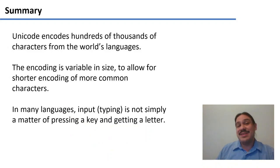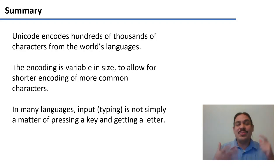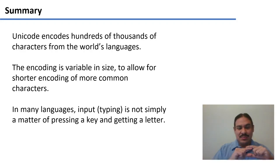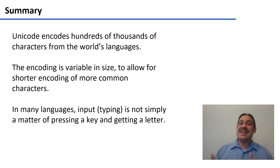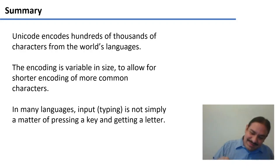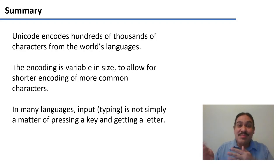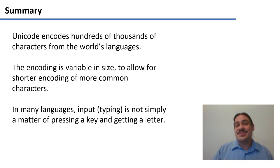In summary, Unicode is an amazing thing because it lets us represent many thousands of characters from the world's writing systems. It does so by being variable in size — allowing some characters to be represented with one byte, some with two bytes, some with more. This is not always perfect, as we've seen from the Devanagari and Thai examples. And as we've seen from the last few videos, in many languages providing input is not just pressing a key — input, representation, and memory storage are more complex than just hitting a key. In the next few videos we're going to switch gears and talk about knowledge representation.